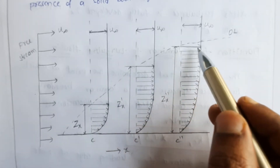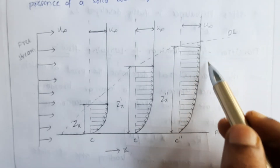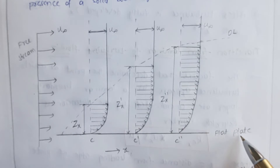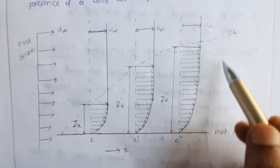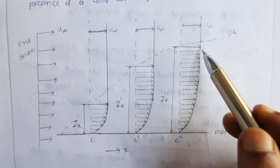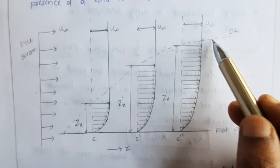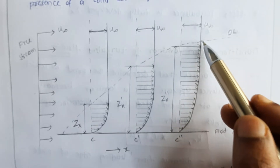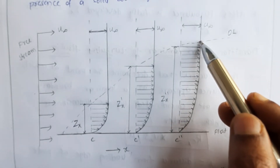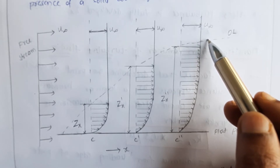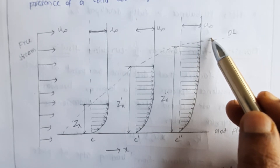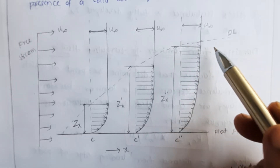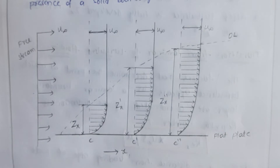Beyond a certain point, the boundary layer thickness becomes constant — even moving further over the flat plate, the thickness does not change. This is the point where 99% of the fluid is moving at the free stream velocity. Moving slightly beyond that, it may reach 100%, but δX is no longer changing. The same diagram represents laminar and turbulent flow in the boundary layer of a flat plate, showing how flows vary within the boundary layer.